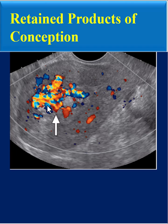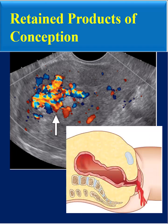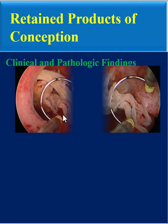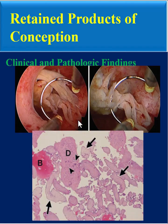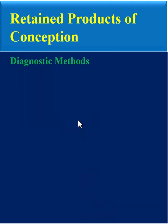Retained products of conception is the second most common cause of postpartum bleeding after uterine atony. Every radiologist or sonographer working in the field of obstetrics and gynecology should be familiar with retained products of conception, and you must know the clinical and pathologic findings of RPOC.